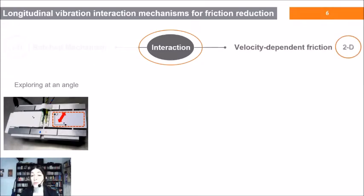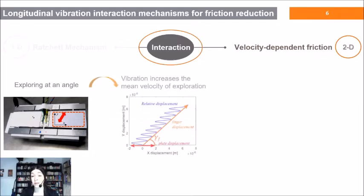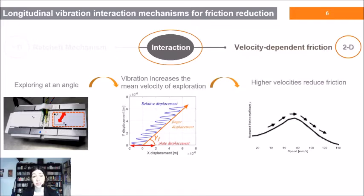For this reason we propose the alternative velocity dependent friction model. It states that exploring at an angle, the mean velocity is increased and at higher velocities within a range, the friction is decreased.